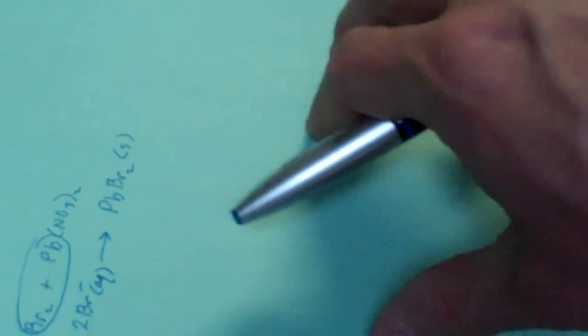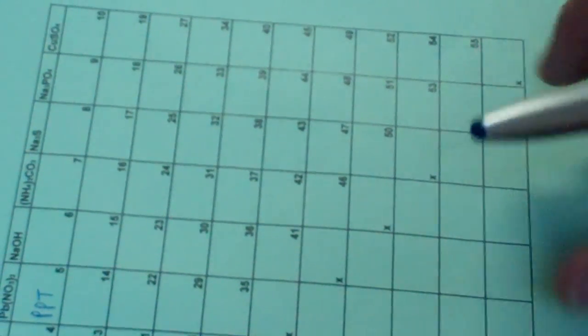Alrighty. Well, this will be a fun lab. It's going to take a little while to complete our data table here. And then, it will probably take you quite a while to complete the back side, because we are going to have a total, if you look at this, of 55 different combinations. So, that should keep you quite busy throughout the period, and then, of course, at home to finish it up. Alrighty. Enjoy.